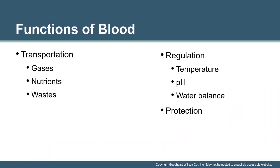Blood is a transportation mechanism. It is classified as a connective tissue due to the fact that it has cells as well as a matrix. The matrix of blood is plasma. It will transport gases, nutrients, and wastes. It also functions in the regulation of temperature, pH, water balance, and serves as a protector due to the fact that it houses and transports immune cells.